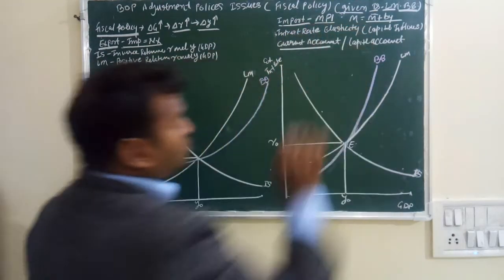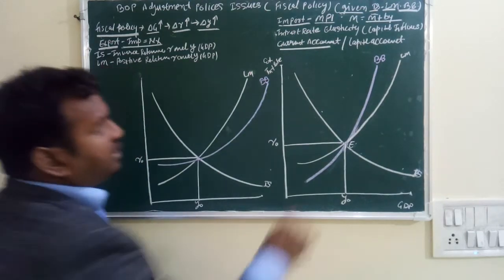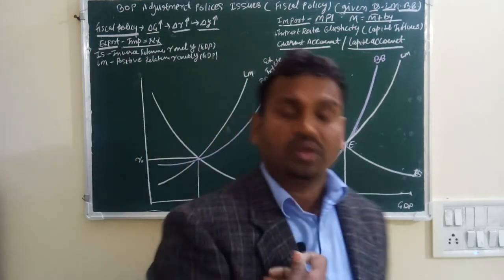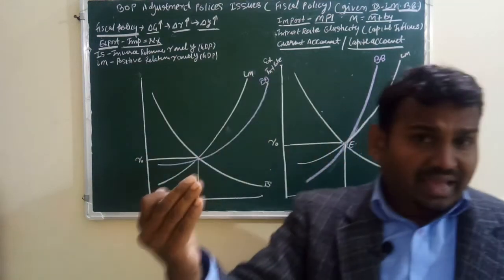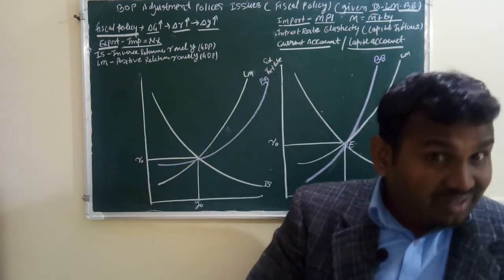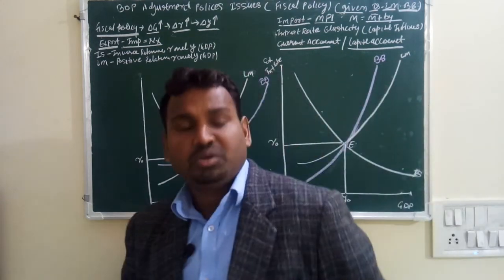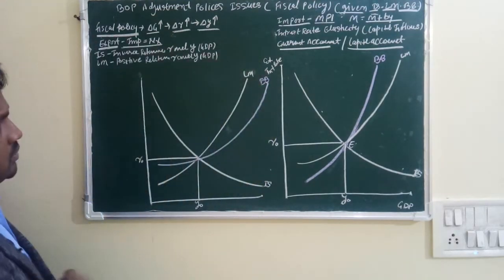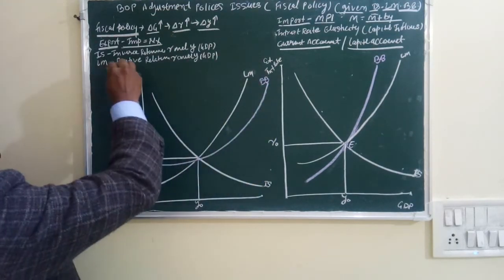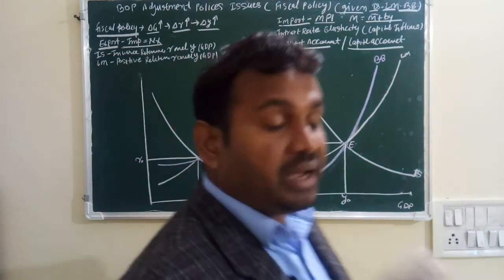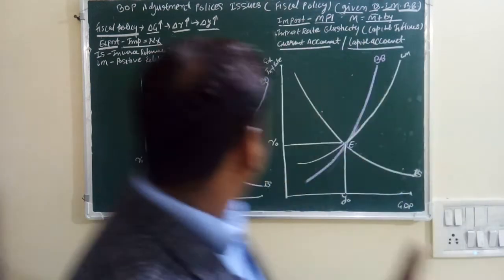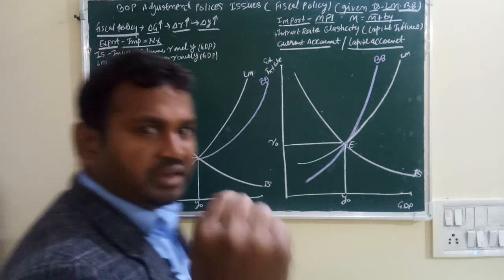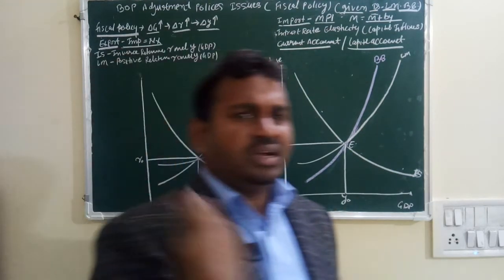So the current account goes to a negative impact and the capital account goes positive because of capital inflow into our country from other countries, since our interest rate is very high. Regarding IS-LM: IS shows an inverse relationship between price, income, and interest rate, and LM shows a positive relationship between income and interest rate — as you have already learned in previous classes.